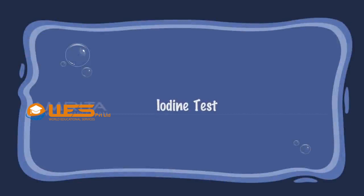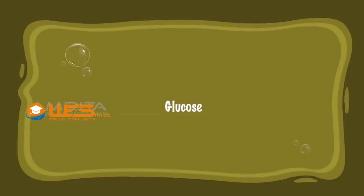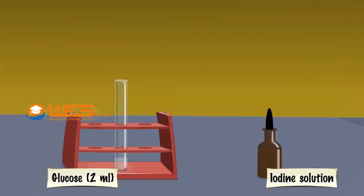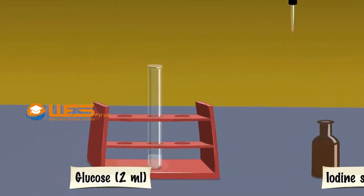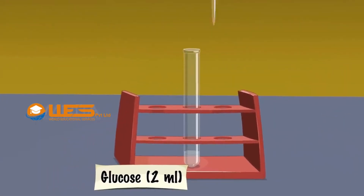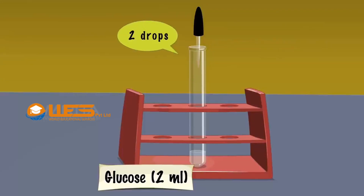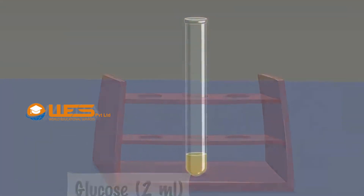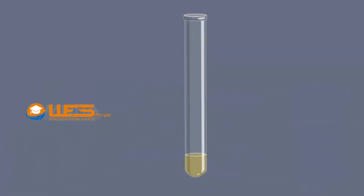Iodine Test. Glucose. Take a few drops of iodine solution using a dropper. Add 2 drops of iodine solution into a test tube containing 2 ml aqueous solution of glucose. There will be no characteristic change, indicating the absence of starch.